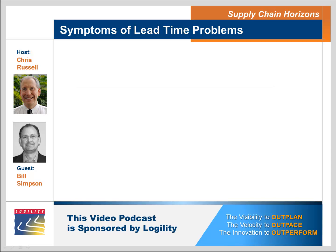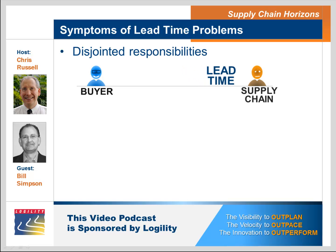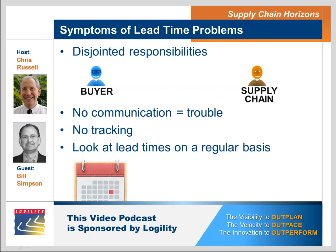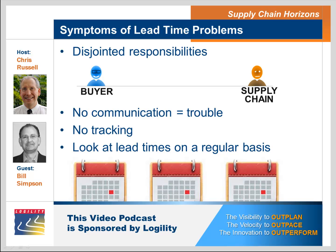The first thing I see is it's typically disjointed. A buyer in a retail organization may have established the lead times, but they're never tracking them — it's the supply chain people that manage that. So if you have those two groups not talking to one another, you're going to have incorrect lead times. The second thing is they're not tracking it on a regular basis. The best companies are looking at this on a monthly basis, examining what the anomalies and outliers are, and determining if those are going to remain or if they need to adjust their lead times.